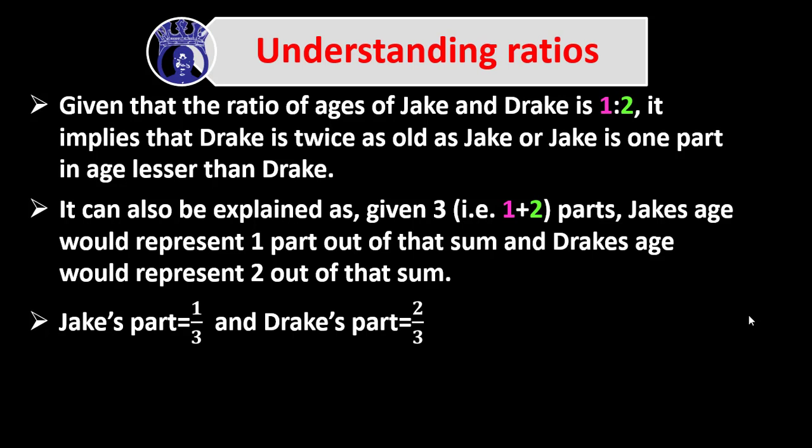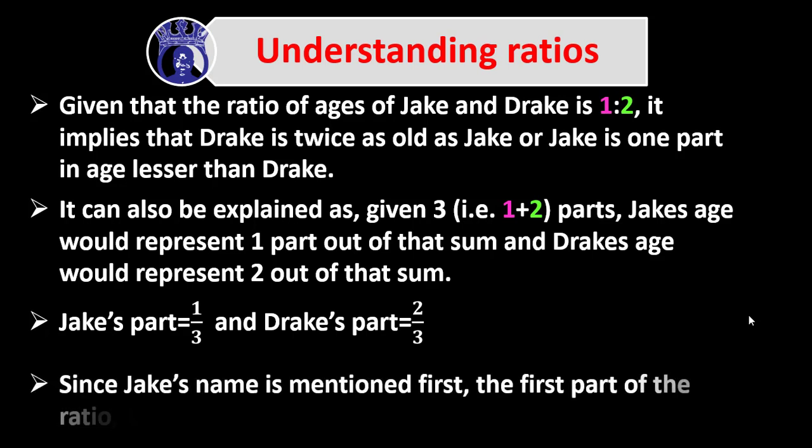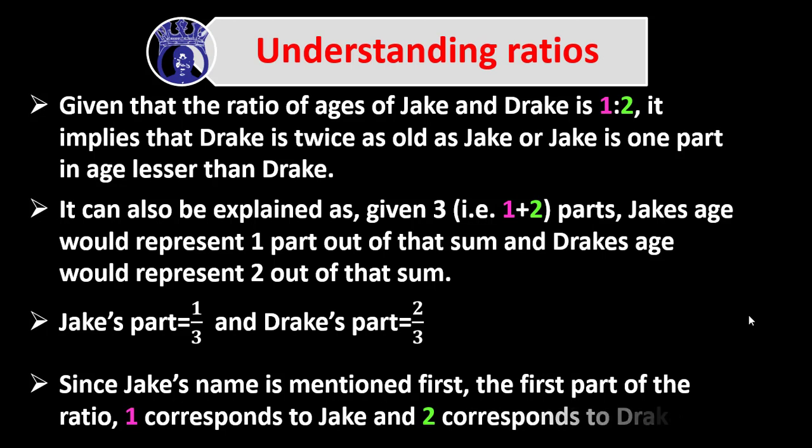Since Jake's name is mentioned first, the first part of the ratio — 1 — corresponds to Jake, and 2 corresponds to Drake. This means ratios are order sensitive. The order in which you write a part in a ratio is very important. If you miss out on that, you will end up with confused results that do not correspond to what is supposed to be gotten. So please, let's be careful when doing these comparisons — ratios are order sensitive.